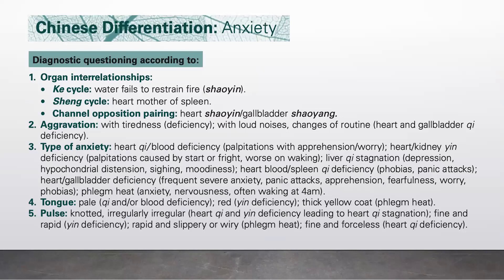Next we look into the type of anxiety. If due to heart qi or blood deficiency, there will be palpitations with apprehension and worry. If due to kidney and heart Yin deficiency, there will be palpitations caused by startle or fright, worse on waking. If due to liver qi stagnation, there will be depression, hypochondral distension, sighing, and moodiness. If due to heart blood and spleen qi deficiency, there will be phobias and panic attacks. If due to heart and gallbladder deficiency, there will be frequent severe anxiety, panic attacks, apprehension, fearfulness, worry, and phobias. If due to phlegm heat, there will be anxiety, nervousness, and often waking at 4 a.m.